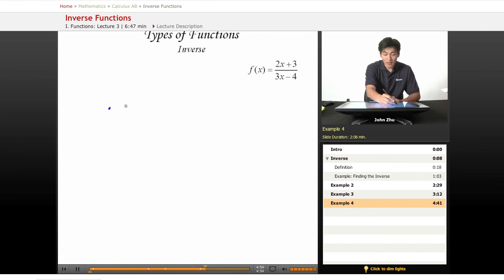Rewriting this as x equals 2y plus 3 over 3y minus 4. To solve for y, we just do a little bit of algebraic manipulation here. 3y minus 4 times x equals 2y plus 3.